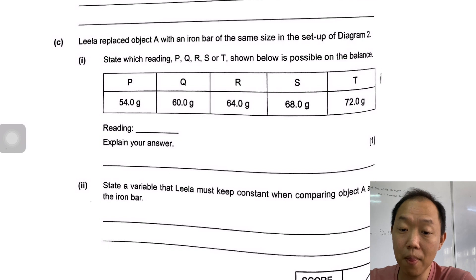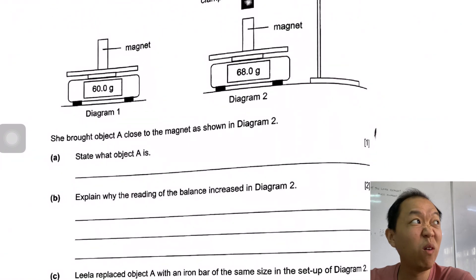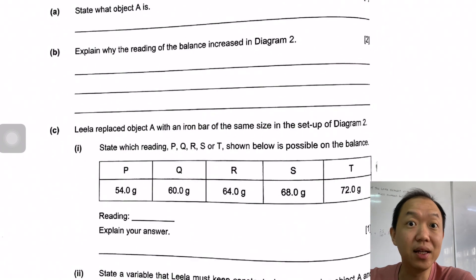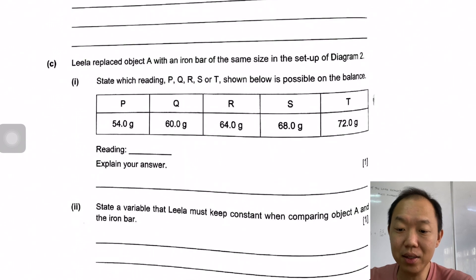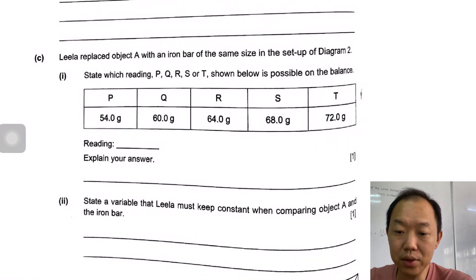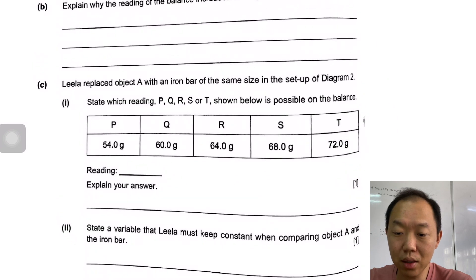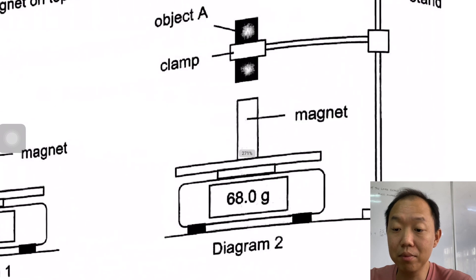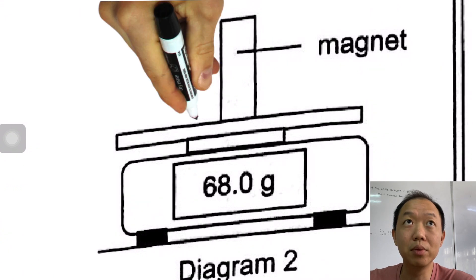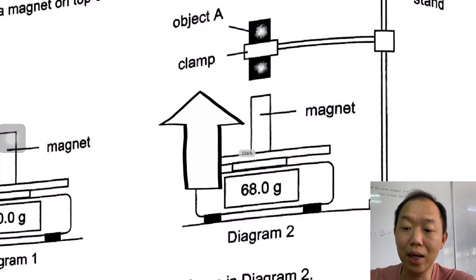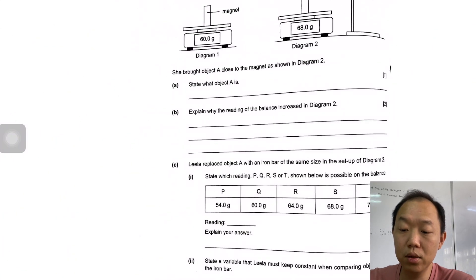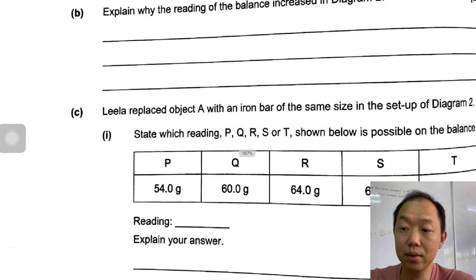Leela replaced object A with an iron bar of the same size. See which reading PQRST is possible with the iron bar. Now you replace object A with an iron bar, so it becomes a magnetic object, and therefore it will attract - it will be attracted to the magnet. Because it is attracted to the magnet, it is going to lift up. Instead of pushing, it is going to be pulling. It is going to pull up. When it pulls up, it is going to be less than 60 grams. Answer is going to be 54 grams. The reason is because it is attracted upwards.